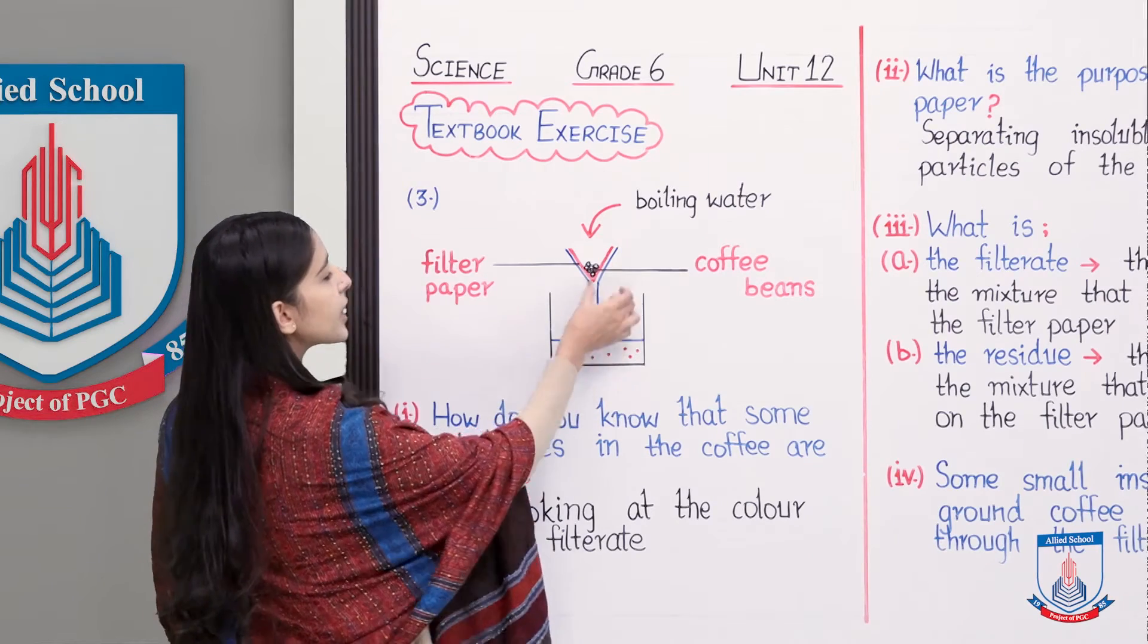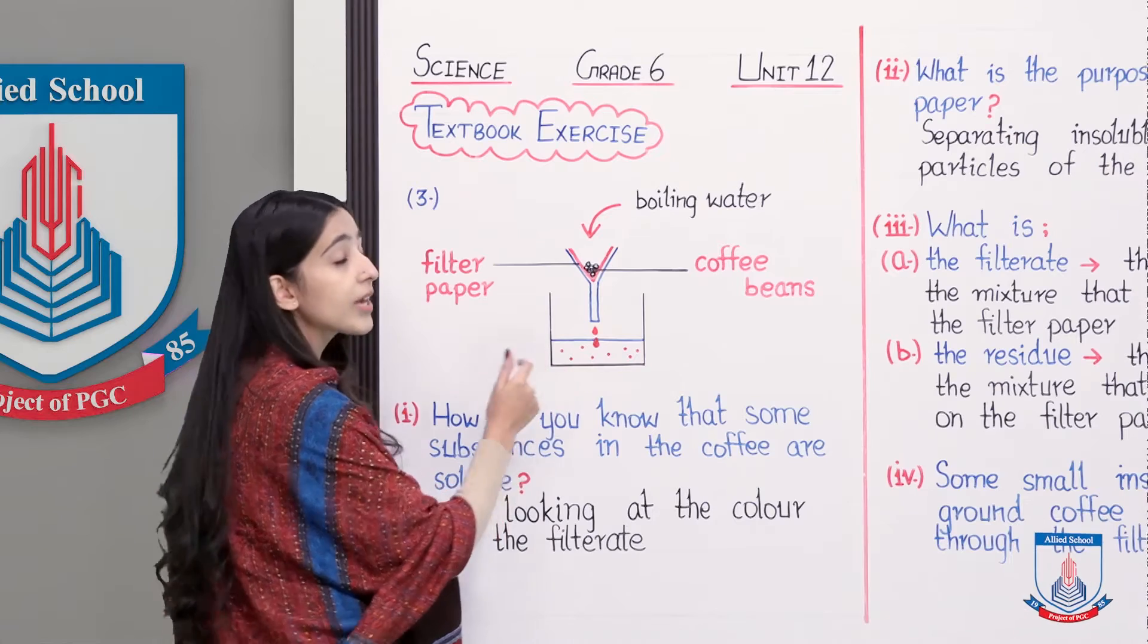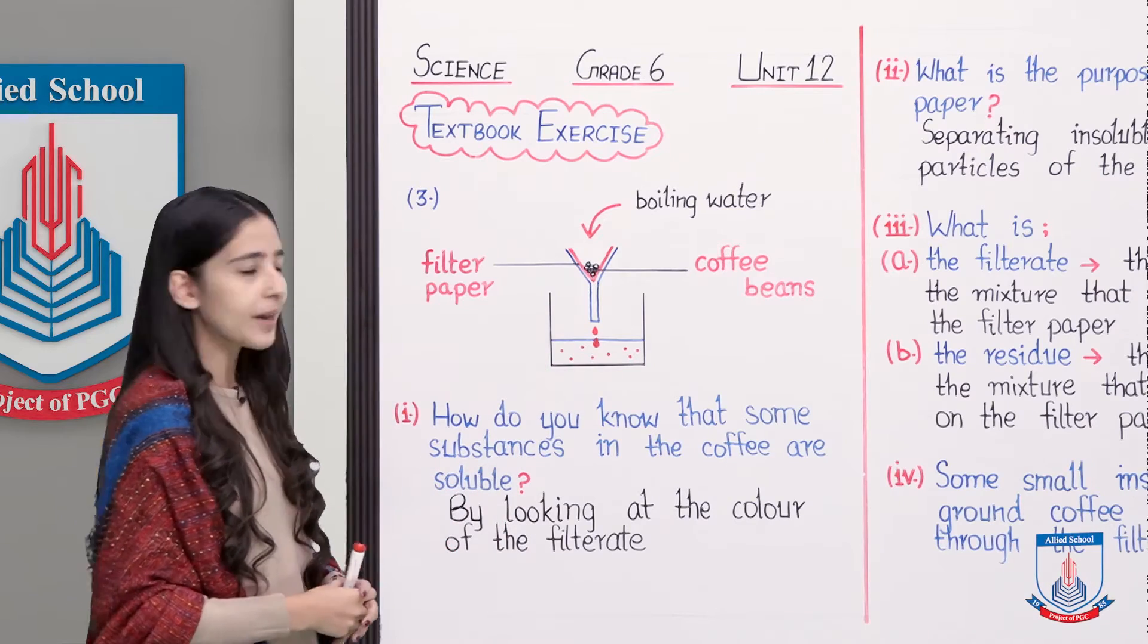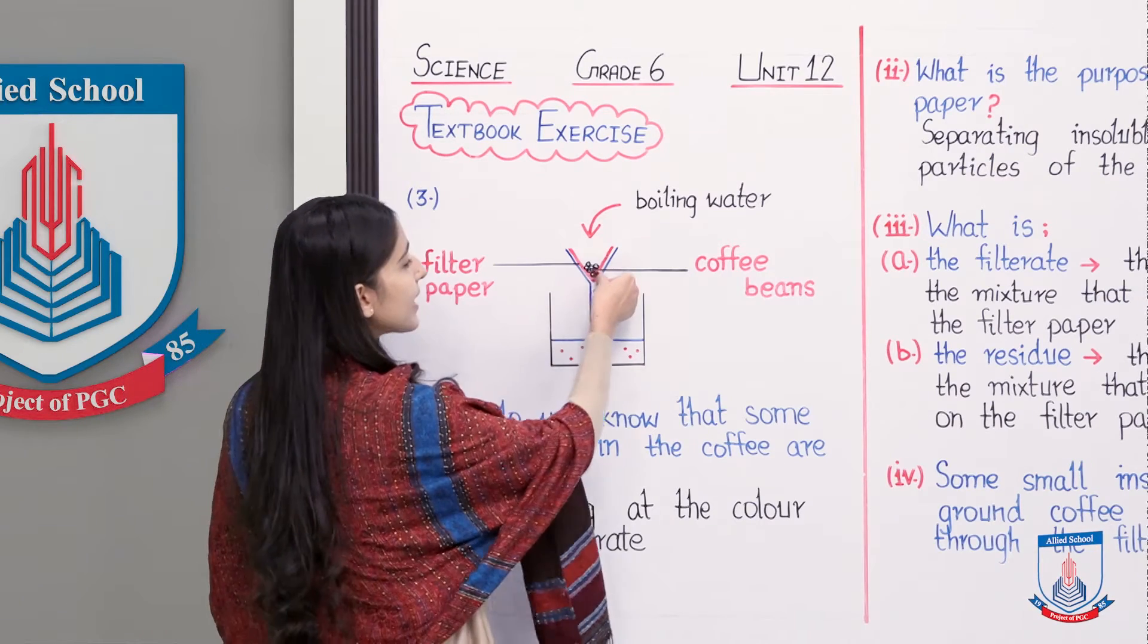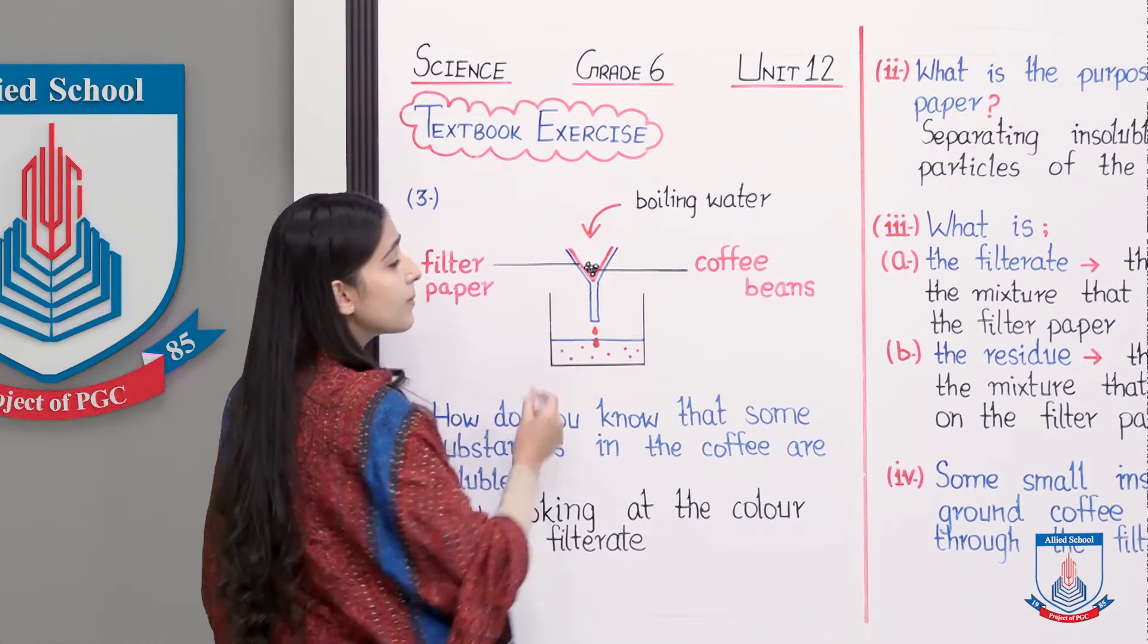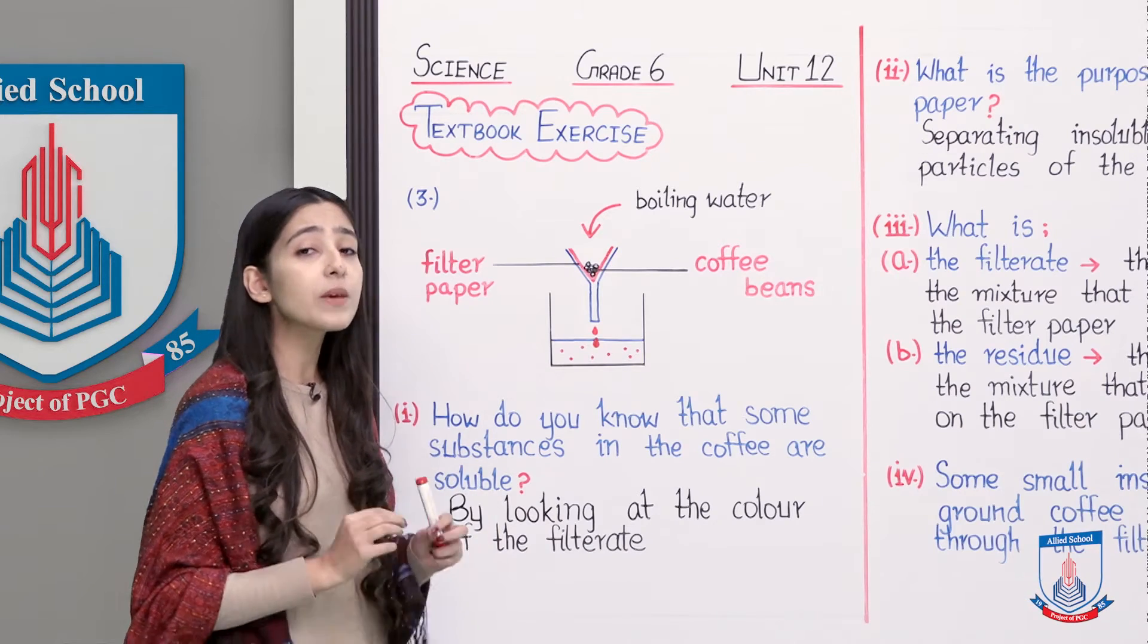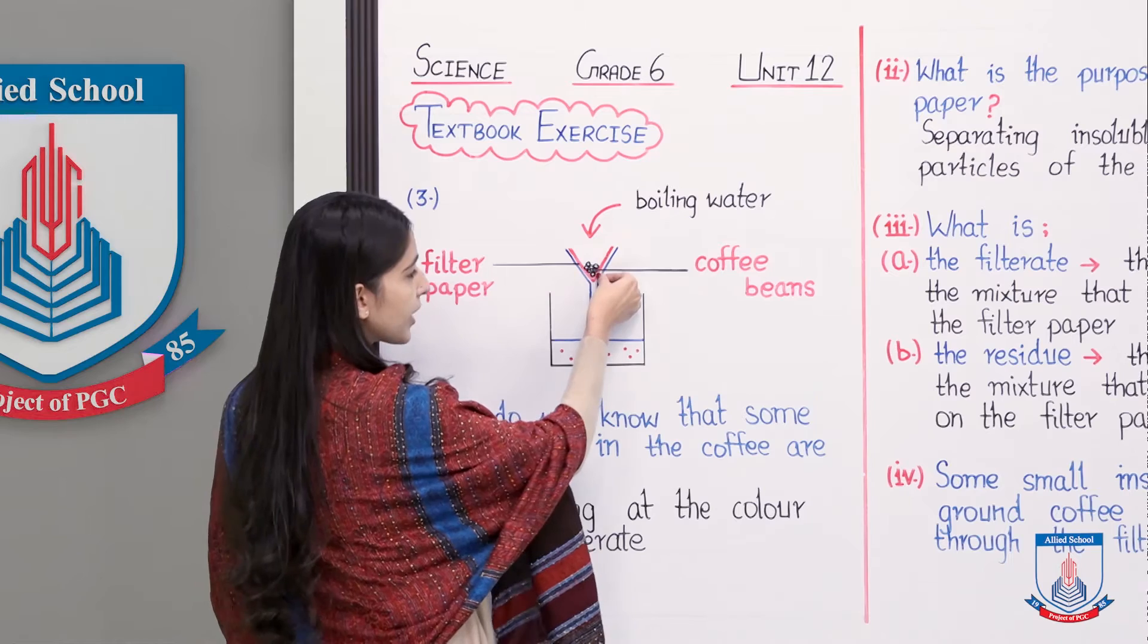First let me tell you what this diagram indicates. This is a glass funnel which you can see as a blue colored shape. This is a beaker which you can see in black color. In it, I have made small black particles, these are insoluble or you can see them as coffee beans.